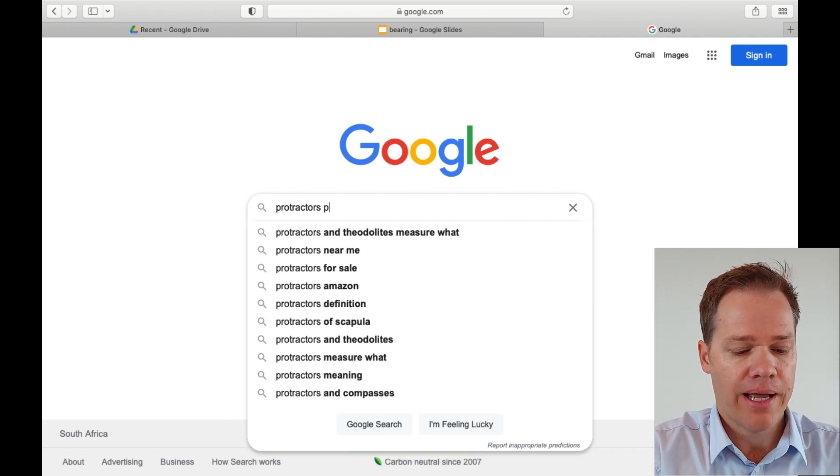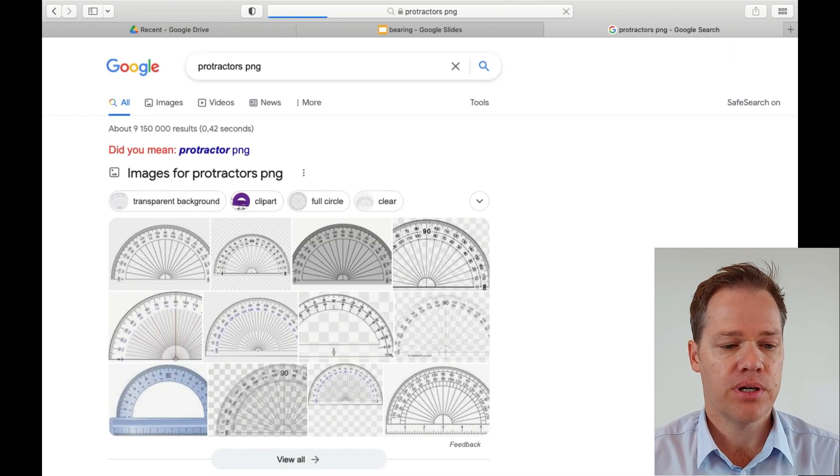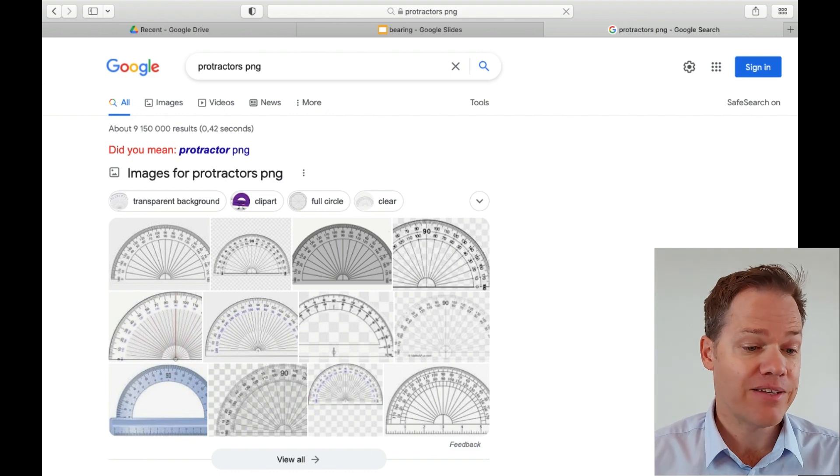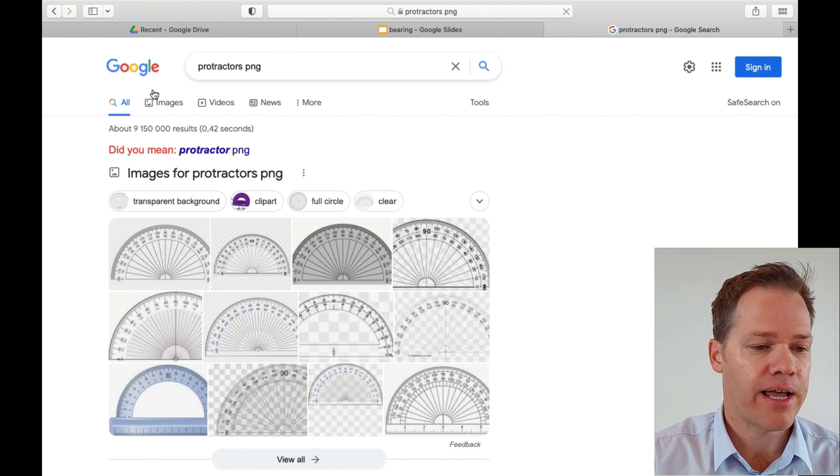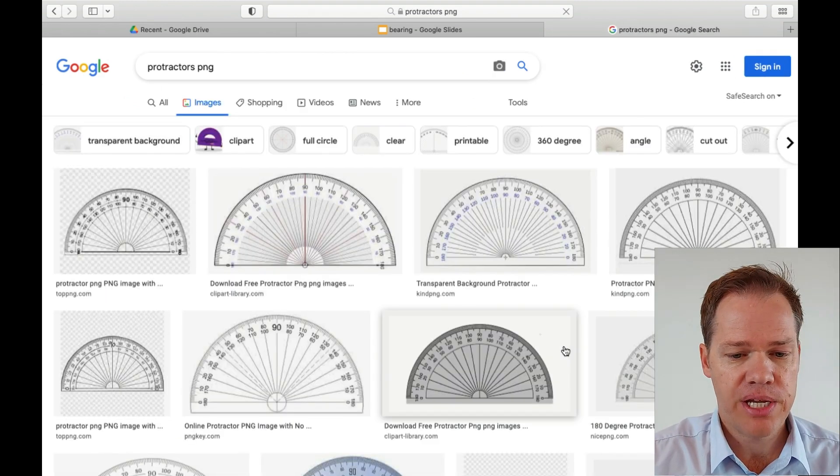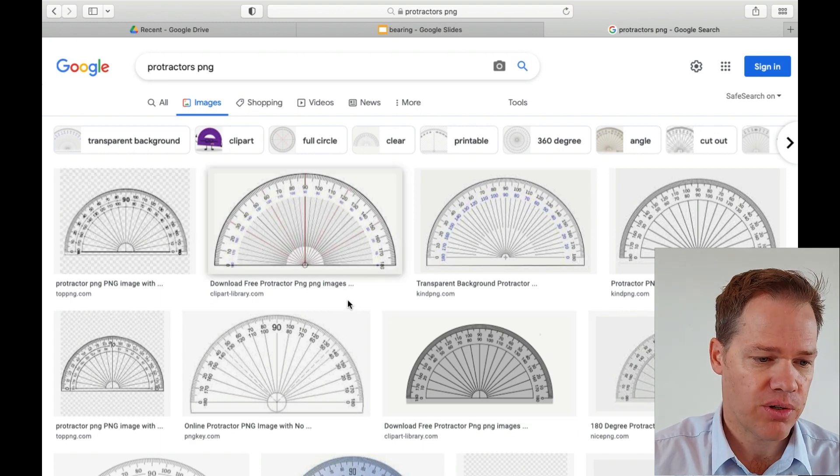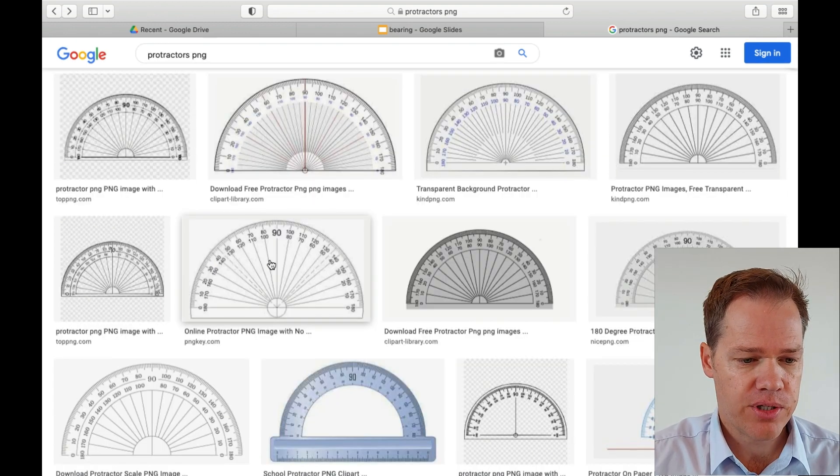Now, ideally, we need a transparent protractor, but there's a way out if you can't find one. I have searched for PNG images, and it's not always possible to find one. But I'm just going to choose this one.